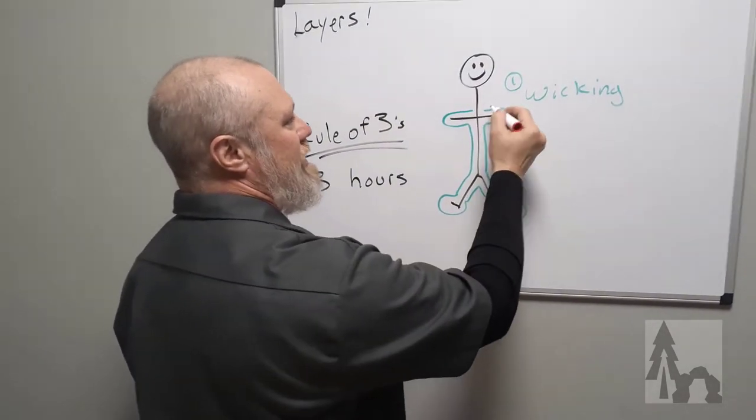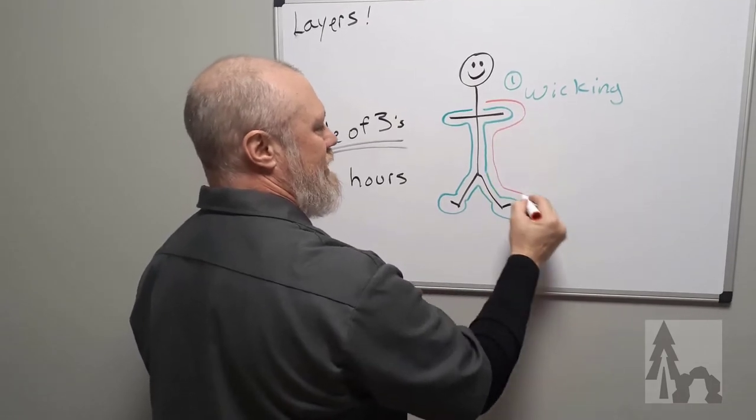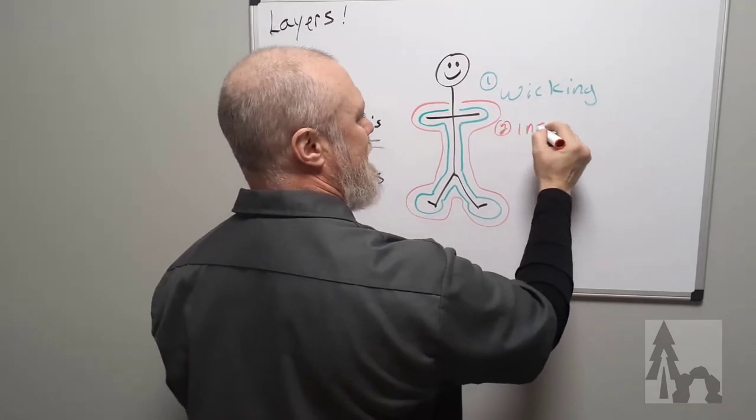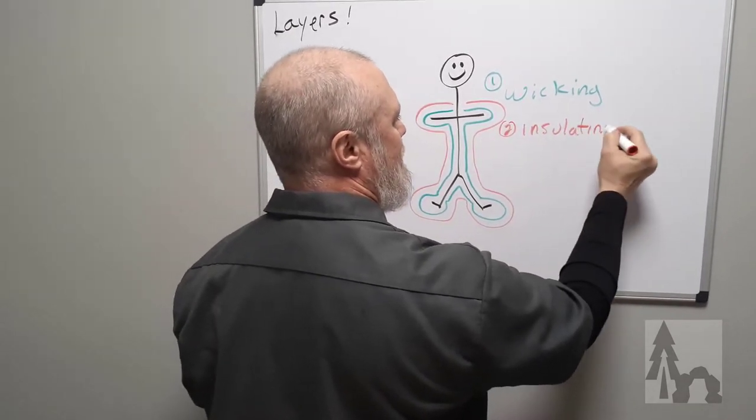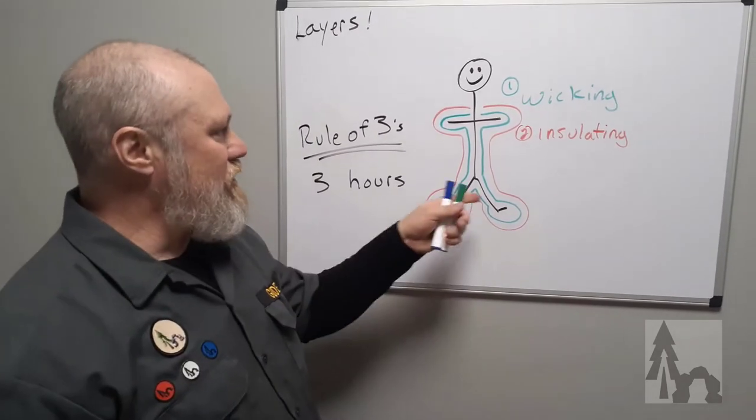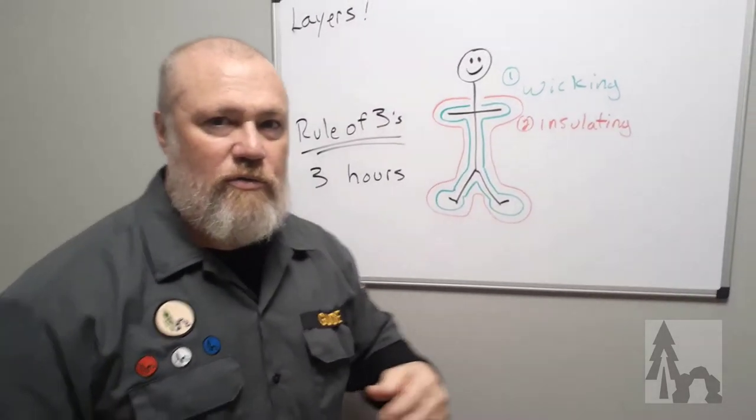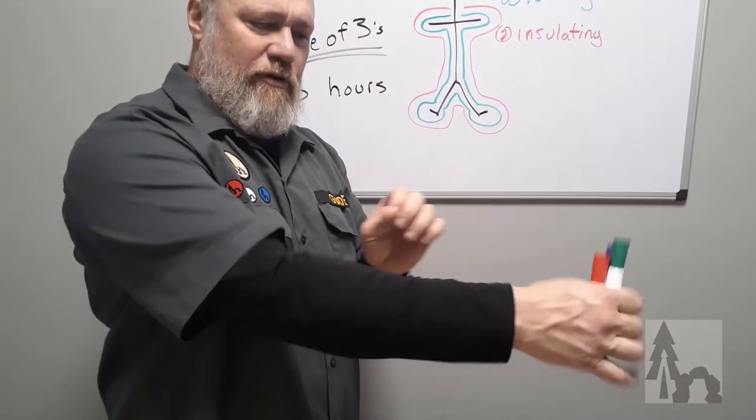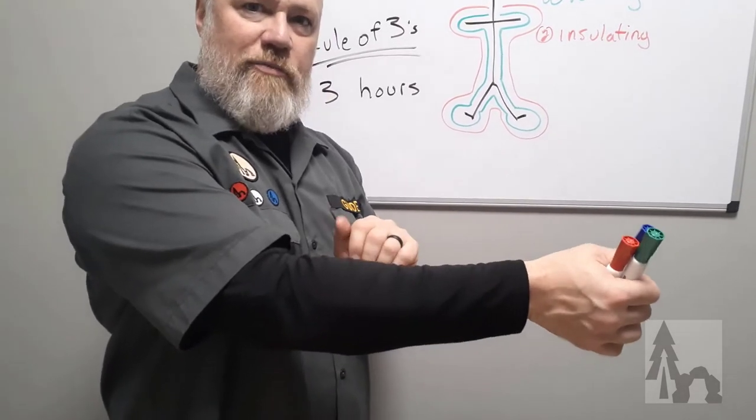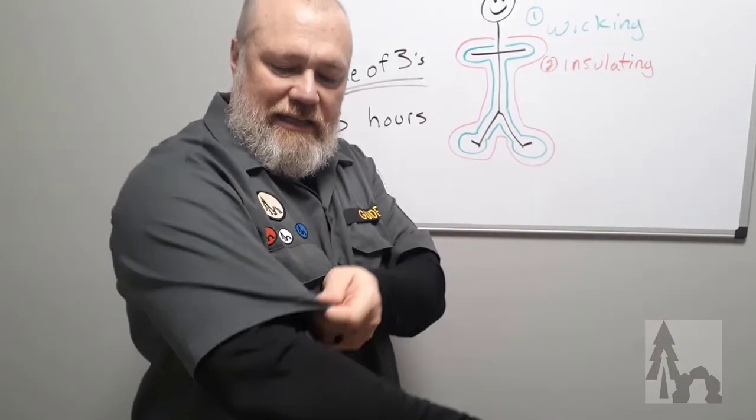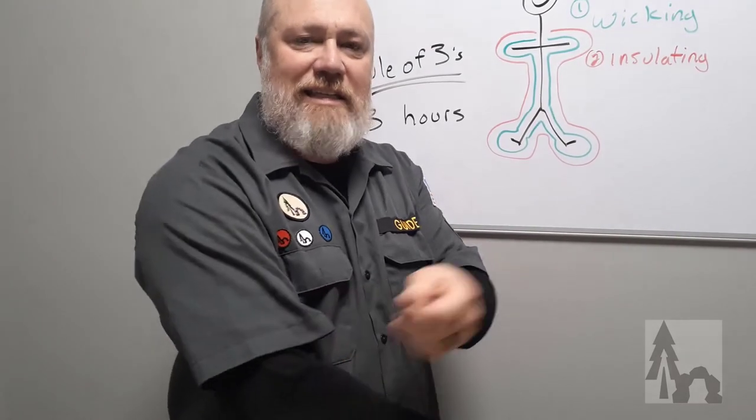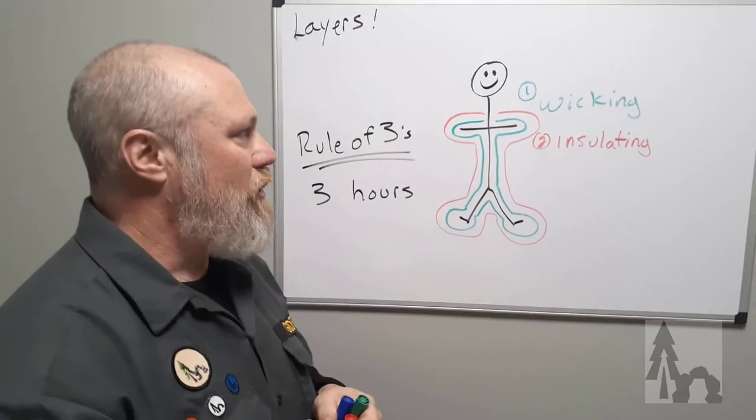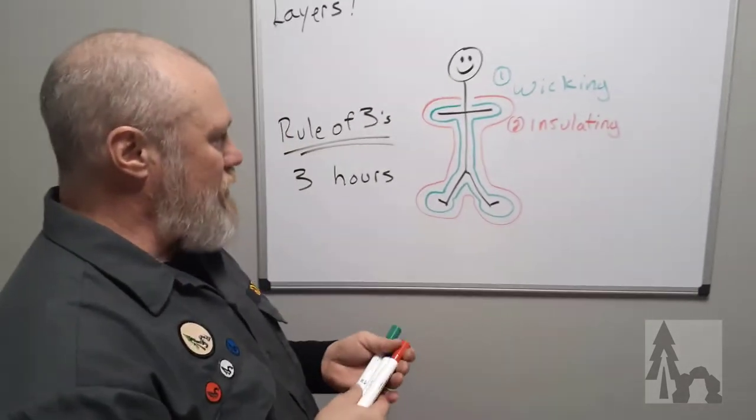Above your wicking layer is going to be your insulating layer. This is going to be your warm fleece or wool layer. This would be your pants and your shirt. Let's say I have a rash guard on today under my uniform, this would be a wicking layer, pulls moisture away from my skin and keeps me dry. And then my uncivilized uniform would be my insulating layer, even though it's not very warm. But I would put on maybe a wool sweater or a fleece vest.